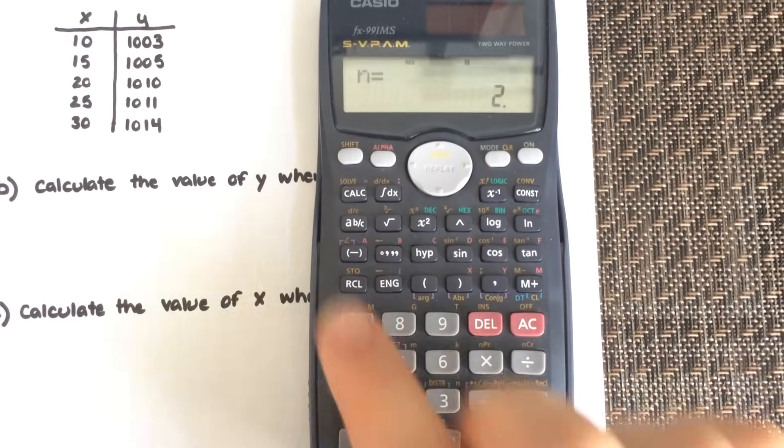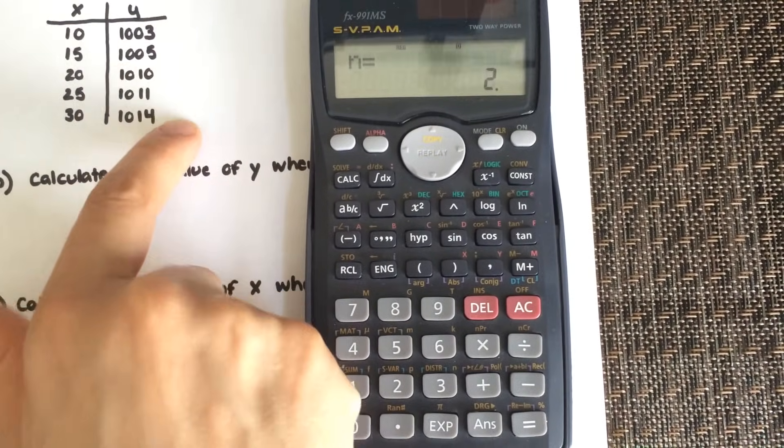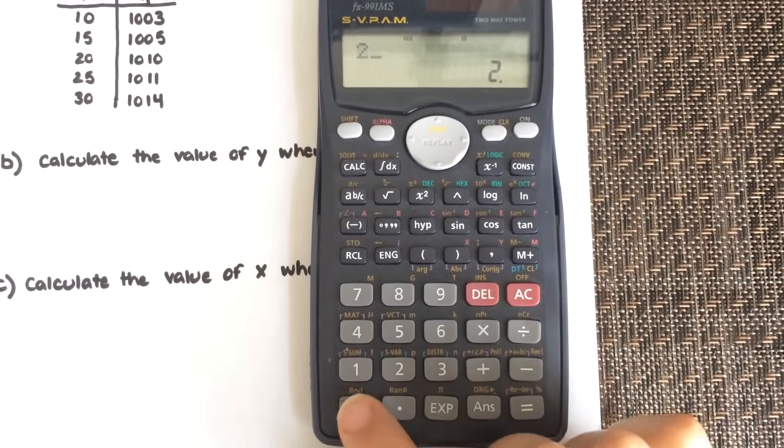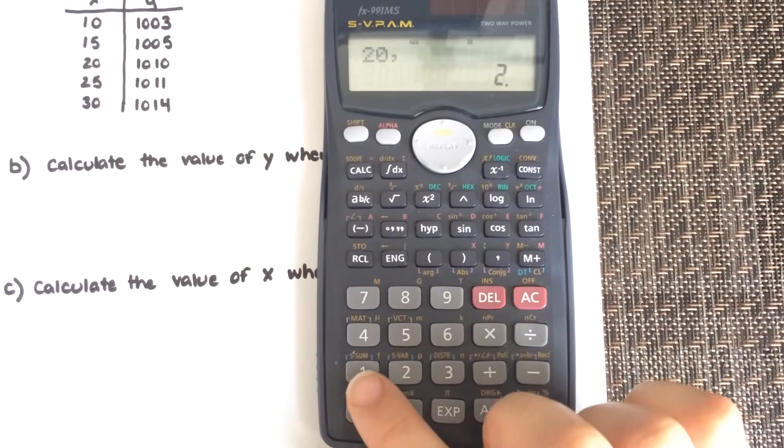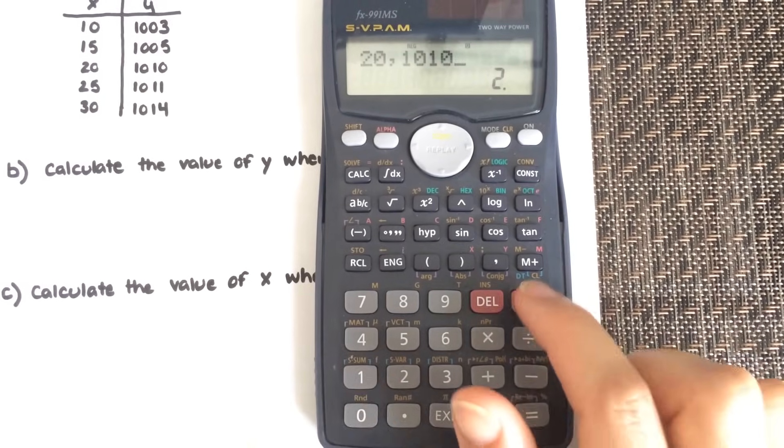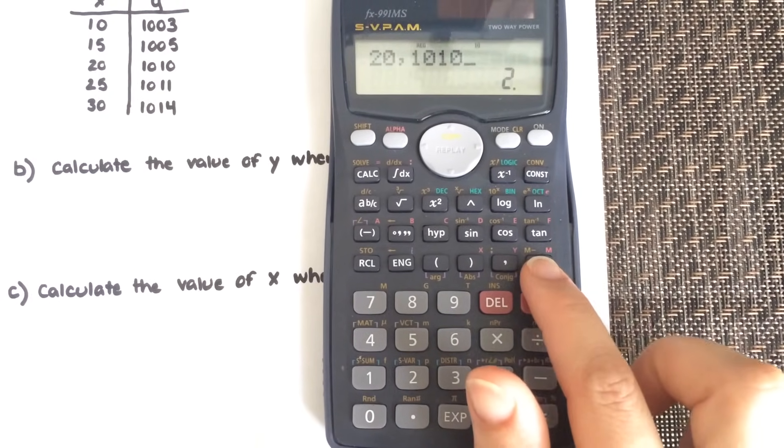And then next data, so I'm just going down the list here, is 20, comma, 1010, m plus.